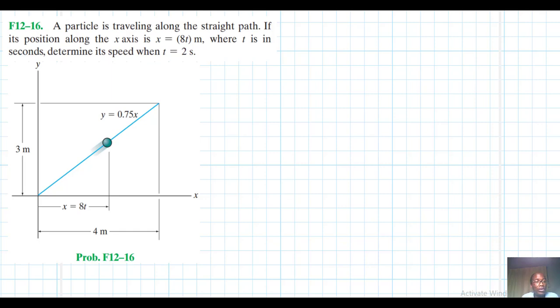Hello, I welcome you all. A particle is traveling along a straight path. If its position along the x-axis is x equal to 8t, where t is in seconds, determine its speed when t is equal to 2 seconds.